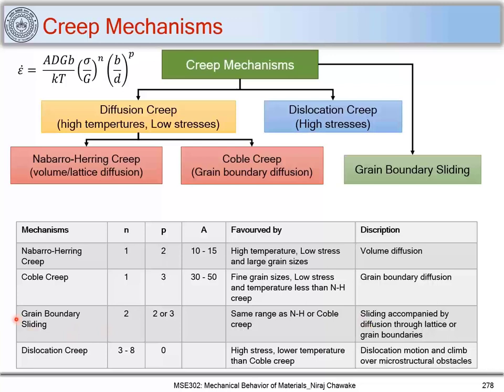For grain boundary sliding, we have seen the combination of dislocation or diffusion assisting the process. The stress exponent n equals 2 and the inverse grain size exponent p equals 2 or 3. It operates in the same temperature range as Nabarro-Herring creep or Coble creep, accompanied by diffusion through the lattice or grain boundaries. For dislocation creep, the important point is that the inverse grain size exponent p equals 0, meaning dislocation creep does not depend on grain size. The n value is 3 to 8, and it occurs at high stresses.